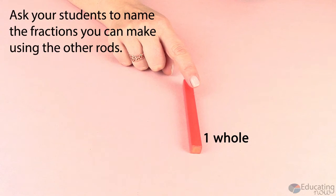From there, I would ask my students to name all the fractions that we can make using the other rods, remembering that we need to make the same size pieces so that we have a name for it. I often give my students a hint and tell them that there are three other colors that we can fit perfectly into the orange.